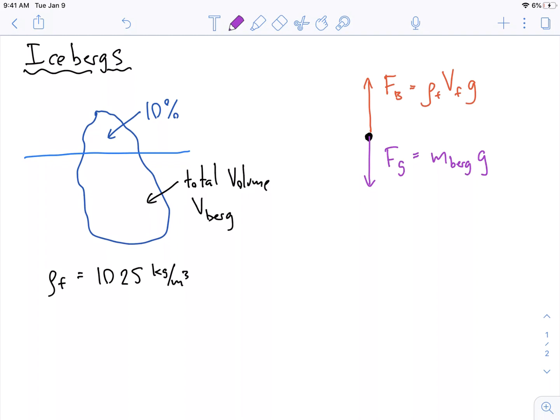And we know actually that we know how mass relates to the density, that this is actually related to the density of the berg times the volume of the berg times g, right.